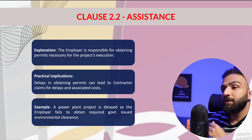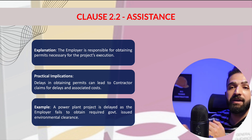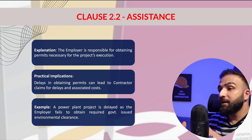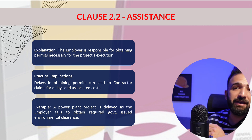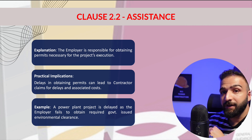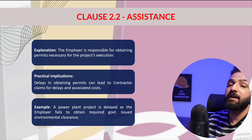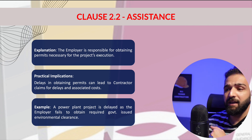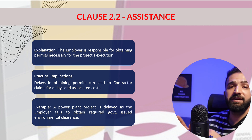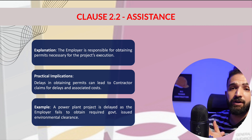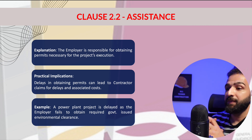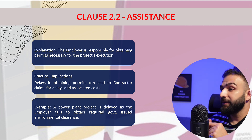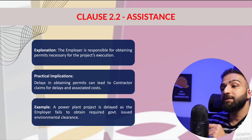For example, in a power plant construction project, the contractor requires a government-issued environmental clearance to begin excavation. The process is stalled because the employer delays in submitting the required documents to the authority. This will push back the contractor's start date, and the contractor will file for idle equipment costs and additional overhead due to these delays.